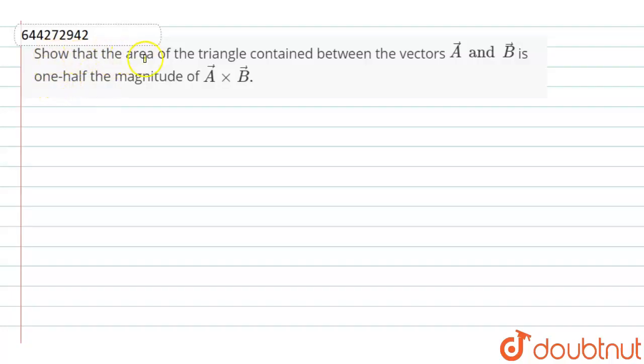Hello dear students, the question is show that the area of the triangle contained between the vectors A bar and B bar is one half of the magnitude of A bar cross B bar.